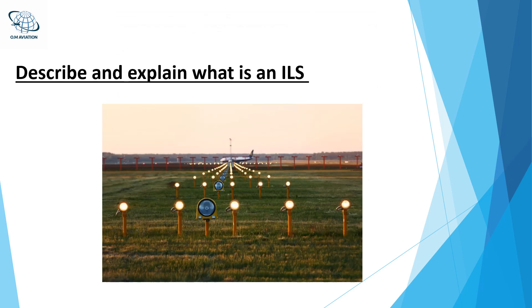The ILS system, Instrument Landing System, is a system that allows direct access to the runway axis in an obstacle-free gliding path. The system consists of several components. The Localizer — a vertical needle in the device indicates the runway centerline. The localizer system operates in the VHF spectrum at odd frequencies between 108.0 MHz to 111.95 MHz, for example 110.3.